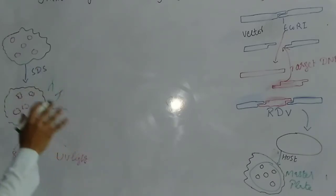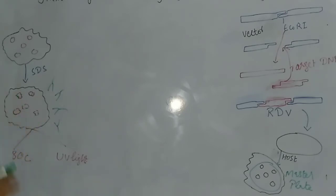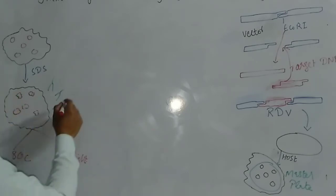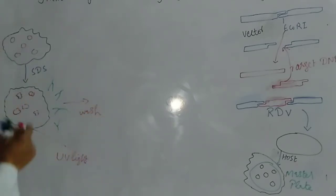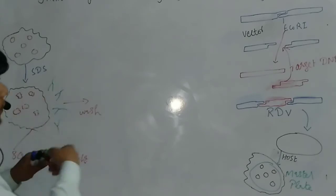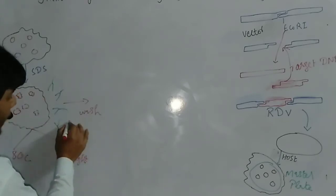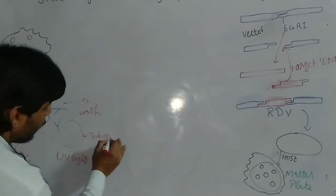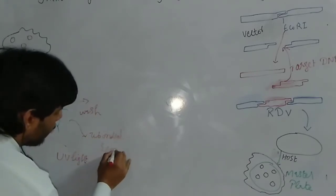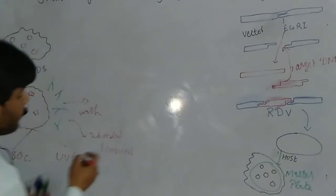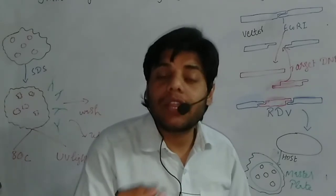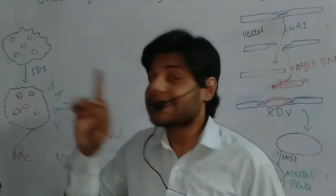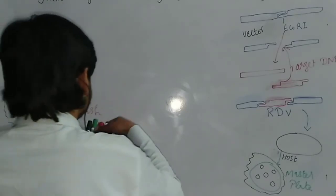The primary antibody — shown here in green — binds to some of the colonies. After that, we wash the nylon filter paper so that all unbound primary antibody is removed, and we are left only with the bound antibody.